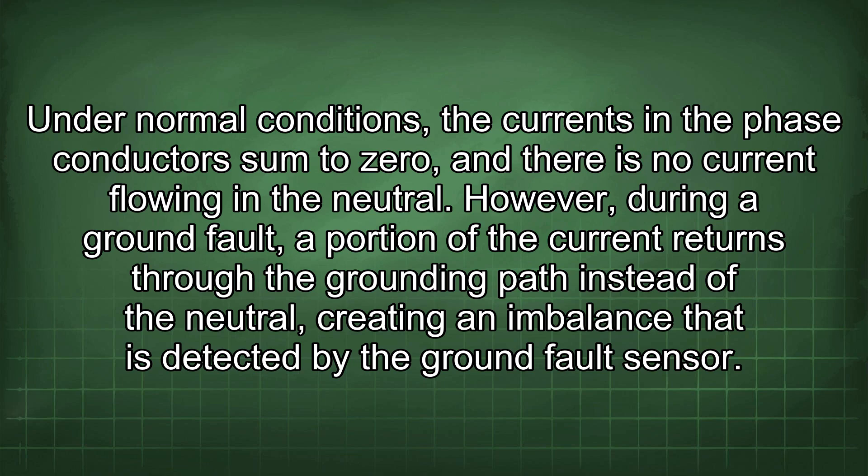Under normal conditions, the currents in the phase conductors sum to zero, and there is no current flowing in the neutral. However, during a ground fault, a portion of the current returns through the grounding path instead of the neutral, creating an imbalance that is detected by the ground fault sensor.